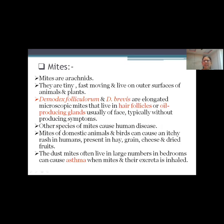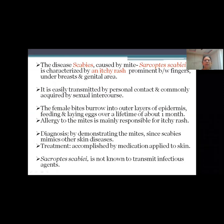Mites of domestic animals and birds can cause an itchy rash in humans, and they are present in hay, grains, cheese, and dried fruits. The dust mites often live in large numbers in bedrooms and they can cause asthma when mites and their excreta are inhaled.